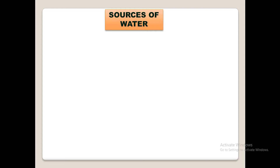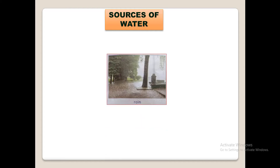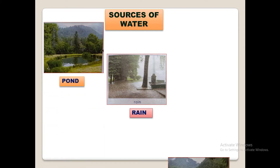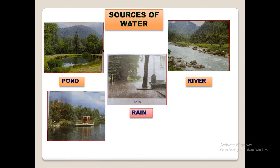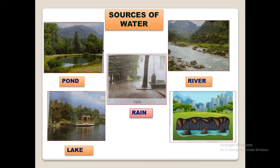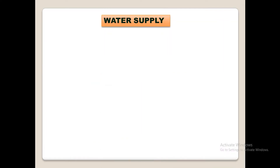Sources of water means from where we get water. Rain is the main source of water. When it rains, the water fills up ponds, rivers, and lakes, and water also goes deep into the soil. This is called underground water.